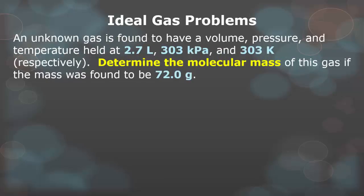An unknown gas is found to have a volume, pressure, and temperature held at 2.7 liters, 303 kilopascals, and 303 Kelvin respectively. Determine the molecular mass of this gas if the mass was found to be 72.0 grams. Now molecular mass is just another way of saying gram formula mass or molar mass. So please use that formula that incorporates the molar mass.